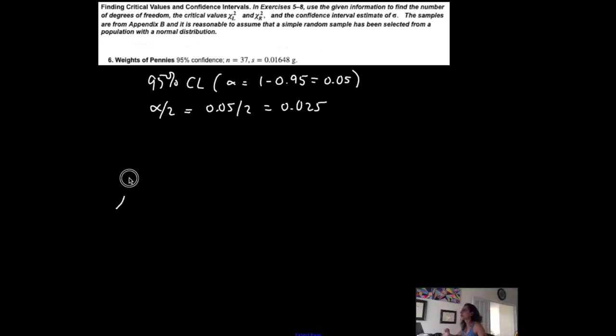And when I draw my chi-squared distribution, it's skewed to the right, and I always label my graph. So this is a chi-squared distribution, which starts at 0. The area in the left-tail is 0.025, and the area in the right-tail is 0.025. That's why we cut it in half.